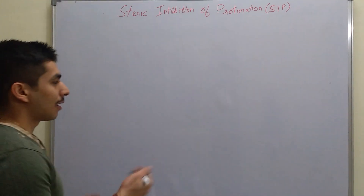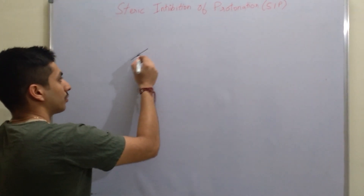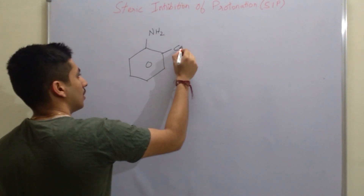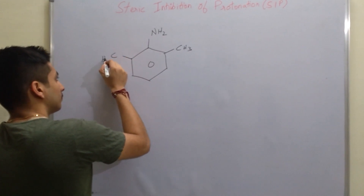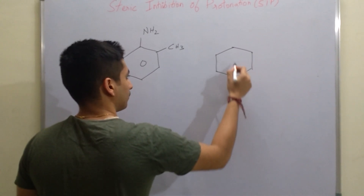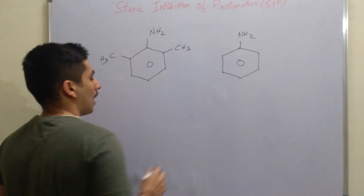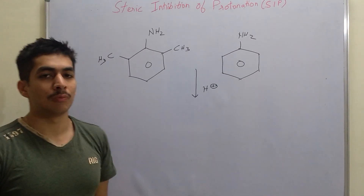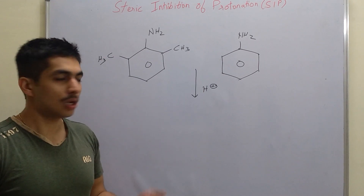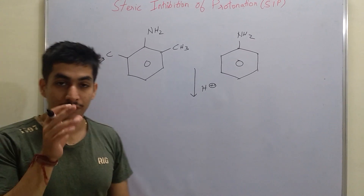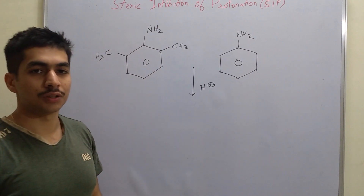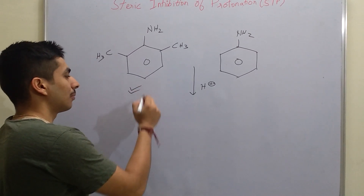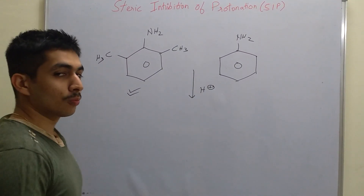Let's take dimethylaniline and alongside that we will take aniline. Now if I say that I am adding an acid — basically H⁺ — so the question is: which one will more likely undergo protonation? Or, the other way to ask is: which of these nitrogens is more basic? Now if someone who is not aware of this concept looks at both molecules, he will say that dimethylaniline is more basic and will undergo protonation faster.